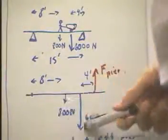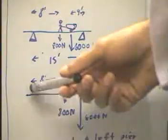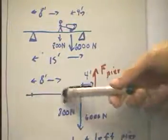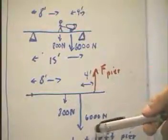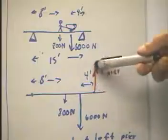We abstract the thing into this situation. We have 8 feet here, 4 feet here. I haven't drawn the 15 feet, but we'll leave that as understood. The 800 newtons acting at this point, the 6,000 newtons acting at this point, and the force of the pier, which we don't know, acting upward at this end.